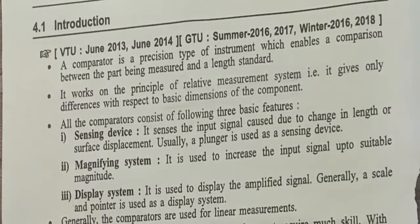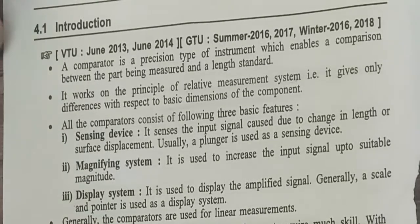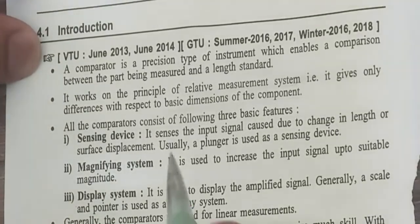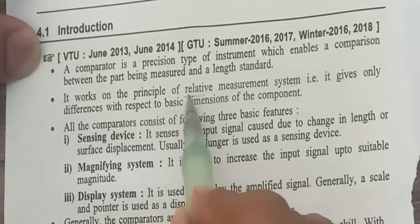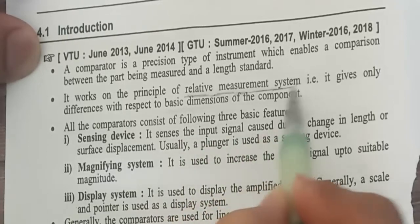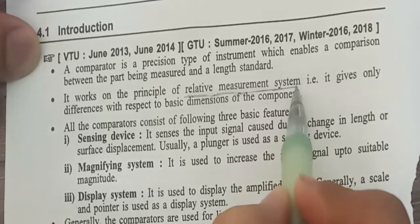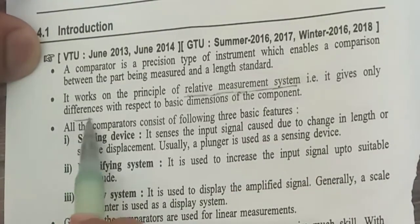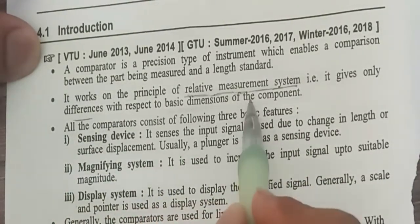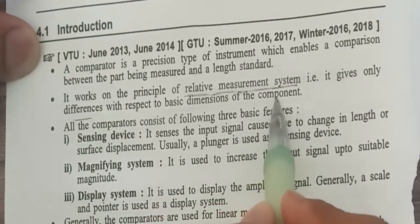So first of all, what is the comparator? It is nothing but a relative measurement system. It works on the relative measurement system and it gives the difference with respect to the basic dimension of the component.